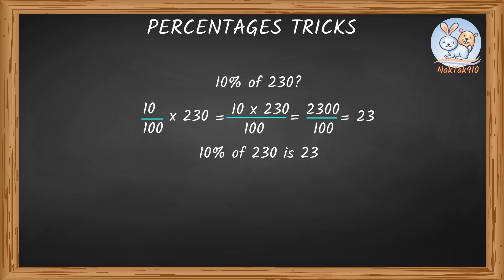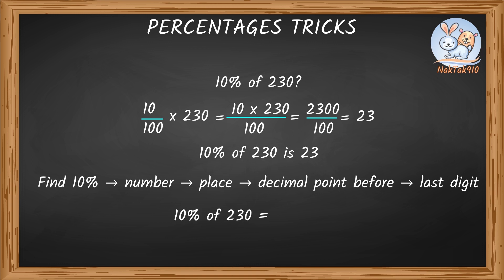But there is a simple trick to find even 10% of any number without any calculation. To find 10% of any number, just place the decimal point before the last digit. 10% of 230, let's place the decimal point before the last digit. 23.0, which is nothing but 23. So, 10% of 230 is 23.